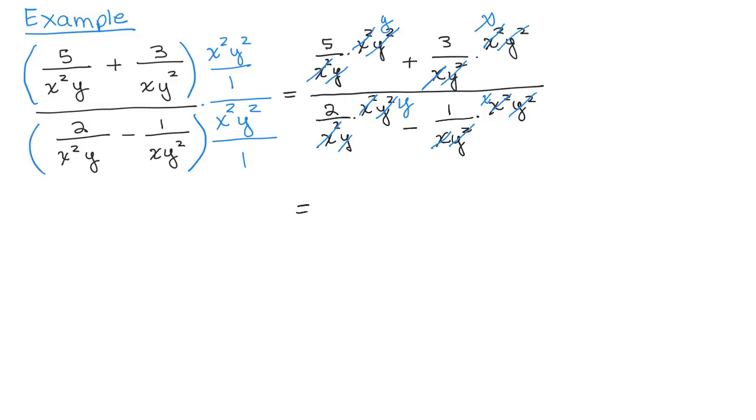So what do I have left? Be careful here. I've got 5 times y, that's 5y, and I have 3 times x. So I have 5y plus 3x in the numerator. And in the denominator, I have 2 times y minus 1 times x, and neither of those could be factored, so that's our answer.